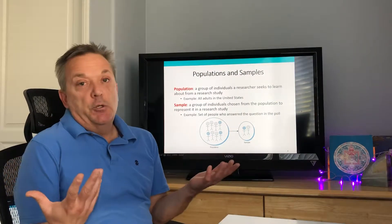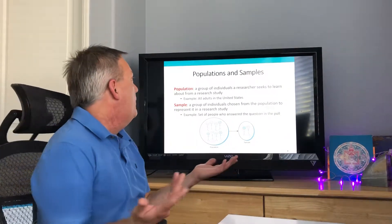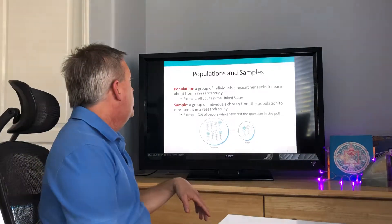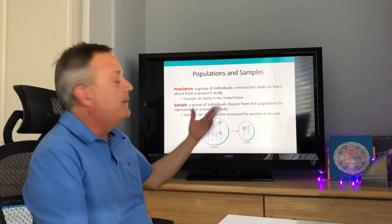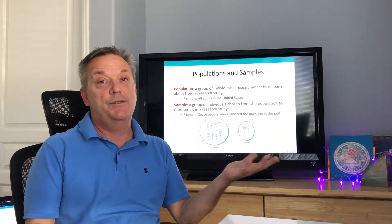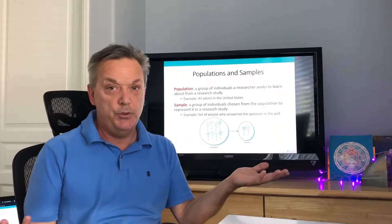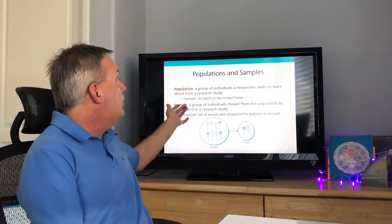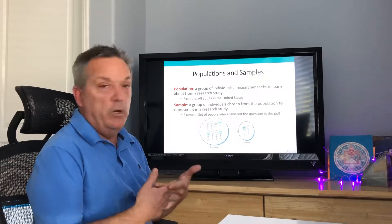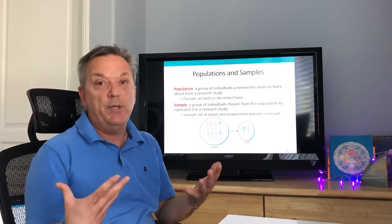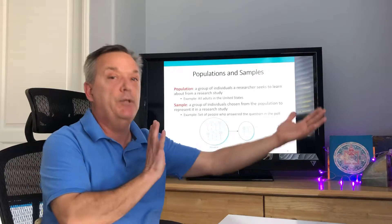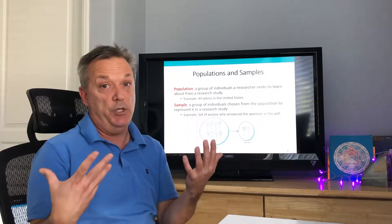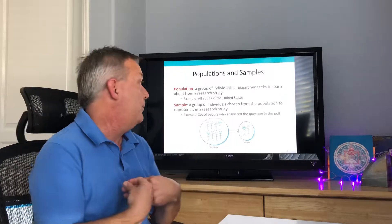The terms population and sample are defined simply: a population is the group of individuals the researcher seeks to learn about — for example, all individuals in the United States, which is impossible to survey entirely. So you pull a sample and extrapolate from it to the population. Getting a big sample size makes it more likely to be representative of the population.